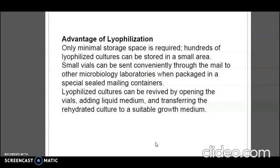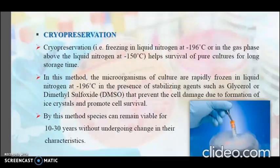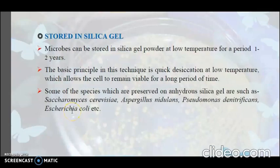Lyophilized cultures can be revived by opening the vials, adding liquid medium, and transferring the rehydrated culture to a suitable growth medium. One disadvantage is that cryopreservation is quite expensive. The next method is storage in silica gel. Microbes can be stored in silica gel powder at low temperature for a period of 1 to 2 years. The basic principle is quick desiccation at low temperature, allowing the cells to remain viable for a long period. Species preserved on anhydrous silica gel include Saccharomyces cerevisiae, Aspergillus nidulans, Pseudomonas denitrificans, and E. coli.